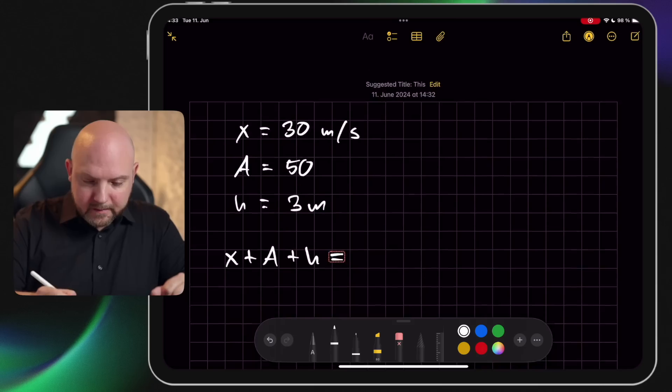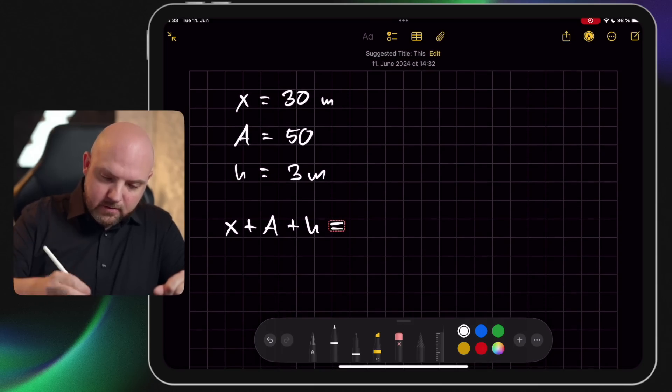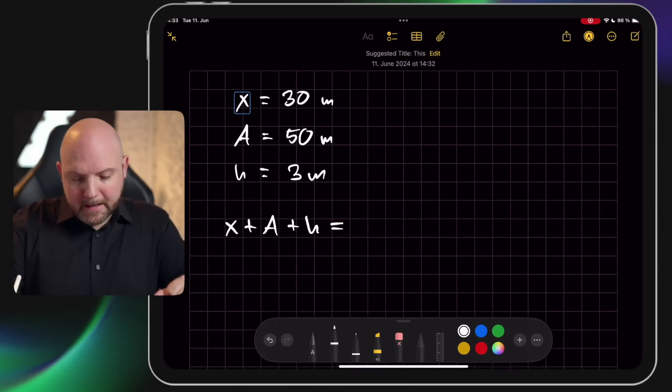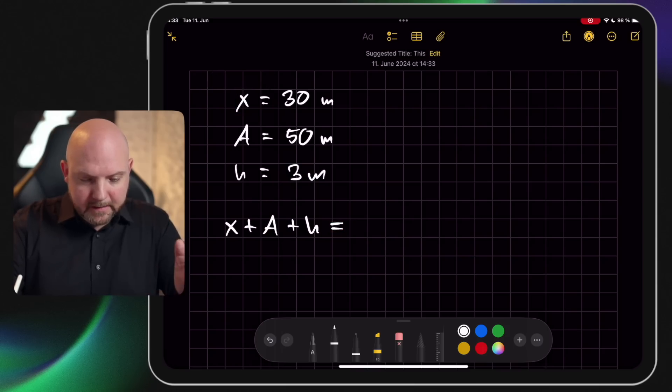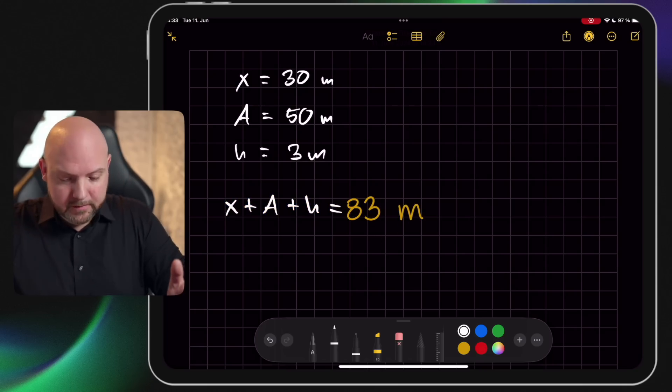Of course, because I'm using plus it's not working with the units. So now if I fix the units and I add an M. Now it says what is this? Well it's an X. And it's 83 meters. It's actually working. Isn't this awesome?